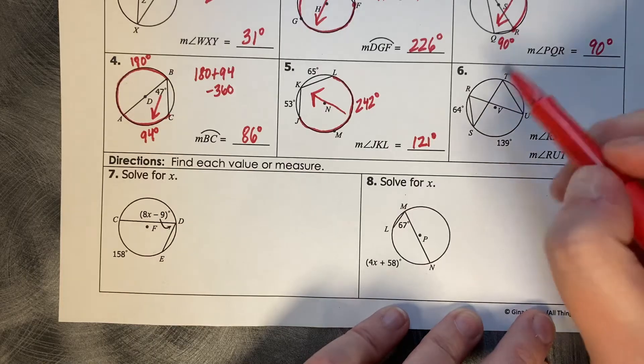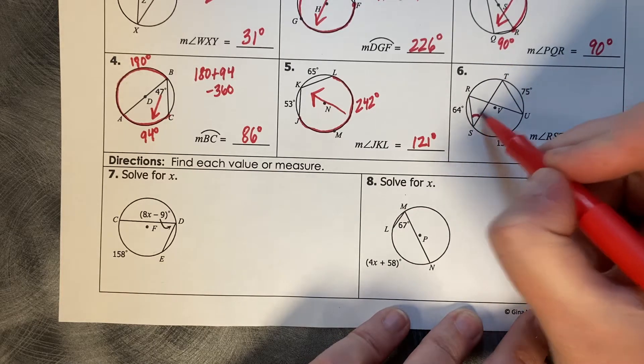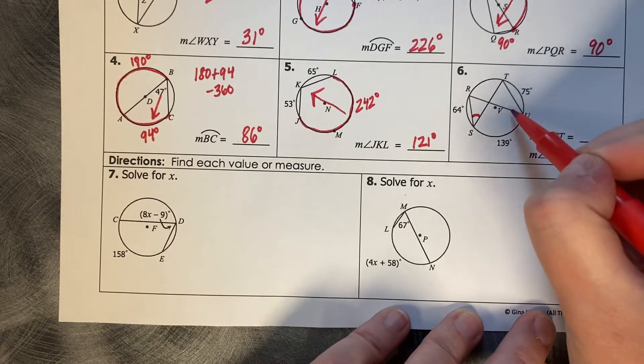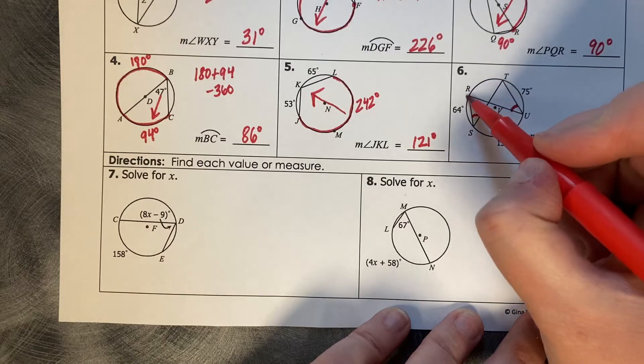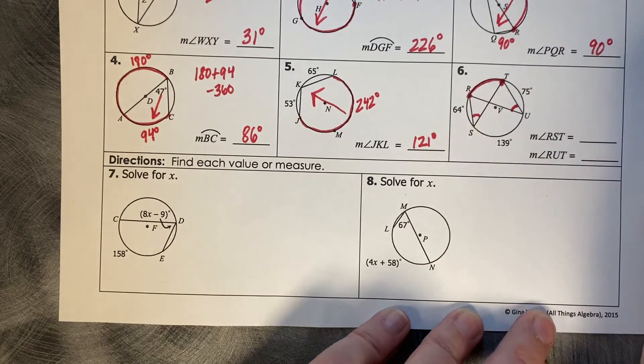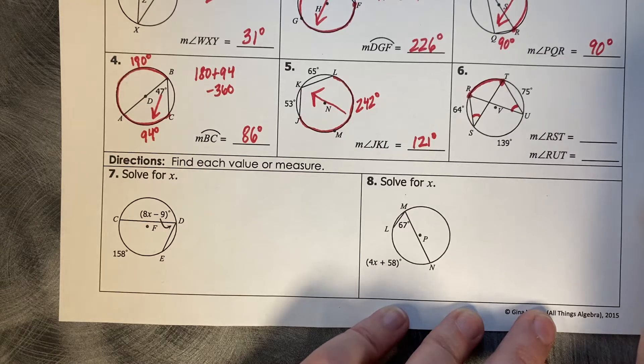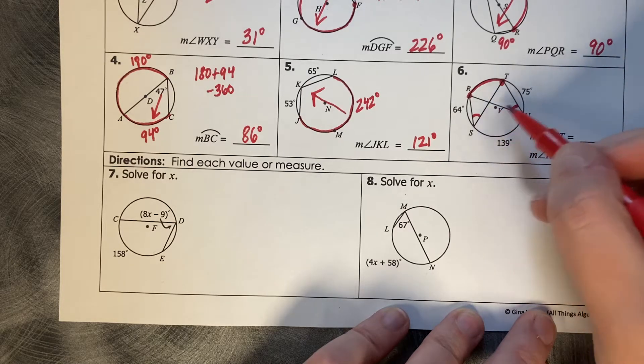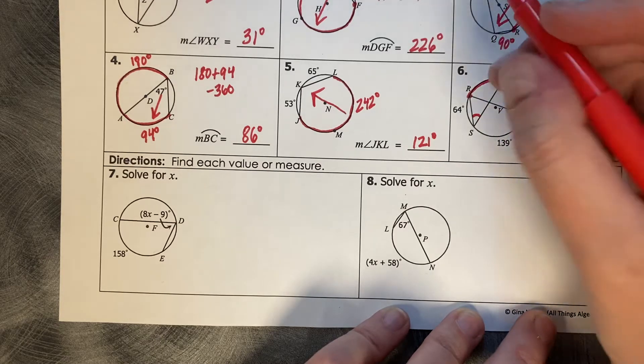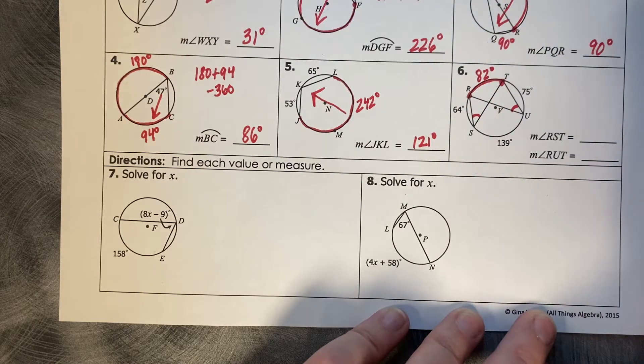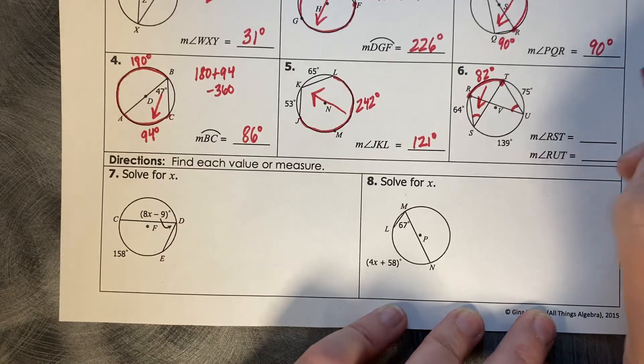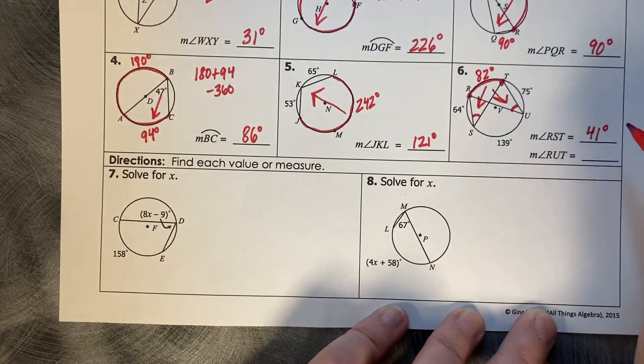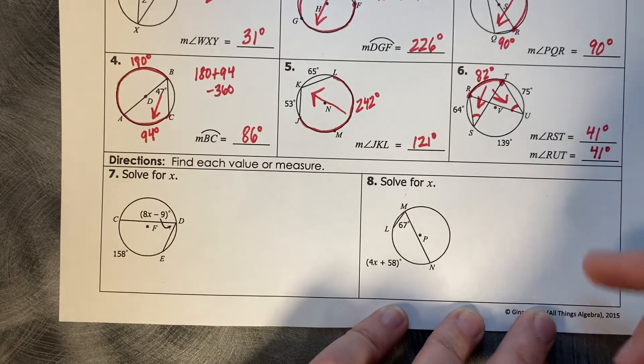We want RST, this angle measure, and we'd like to know what RUT is. I can see that both of those share the arc measure RT. Those are overlapping arcs. So if this is 64, 139, and 75, we add those up and subtract from 360, which leaves us with 82 degrees here. And when we go backwards, we divide by 2, so it's going to be 41 degrees. And because they're overlapping, they share the same measure, so 41 degrees for both.